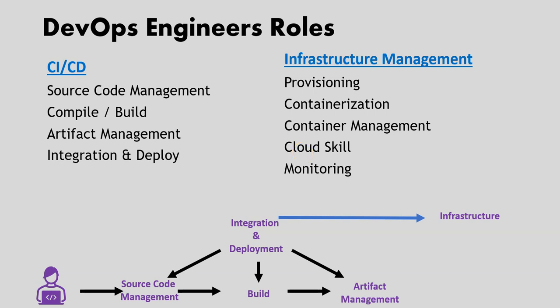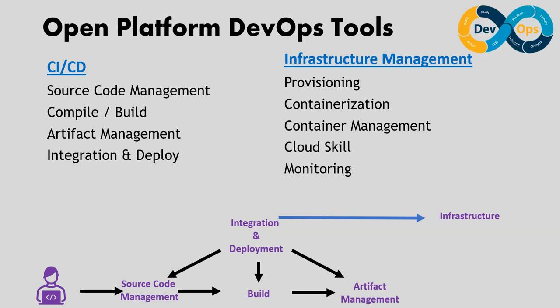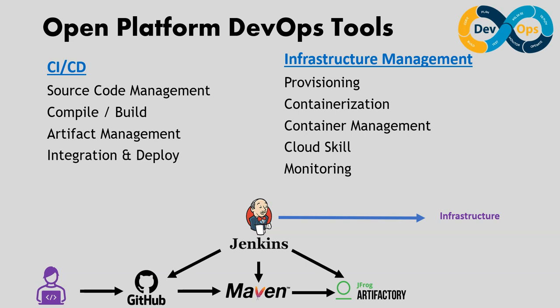To perform these activities, we use tools. These tools are of two types: open platform or open source tools, and cloud native tools. In the open platform — tools that are not dependent on other platforms or cloud native services — there are hundreds of tools available. For source code management, widely used tools are Git, GitLab, and Bitbucket. For build tools: if your source code is Java it's Maven, .NET uses MSBuild, Node.js uses npm, and so on. For artifact management, we widely use Artifactory, and for integration and deployment, we widely use Jenkins.